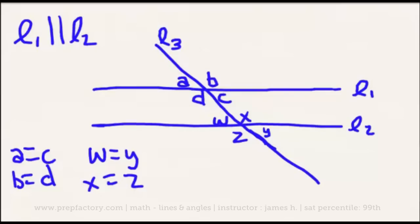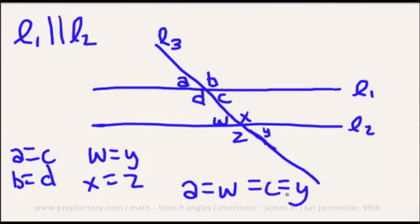With two parallel lines, whenever a line is drawn through them, corresponding acute angles and corresponding obtuse angles are also equal. That means A equals W, B equals X, and so on. By substitution, since A equals W, A equals C, and W equals Y, all of A, W, C, and Y are the same. So all acute angles created are equal, and the same goes for obtuse angles — B, D, X, and Z are all equal. These are called corresponding angles.